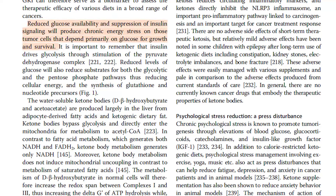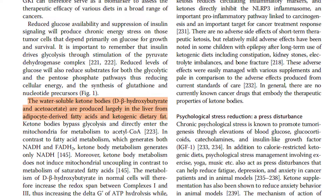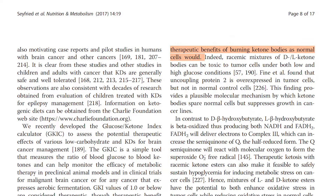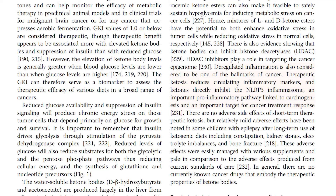Reduced glucose availability and suppression of insulin signaling will produce chronic energy stress on those tumor cells that depend primarily on glucose for growth and survival. The water-soluble ketone bodies, D-beta-hydroxybutyrate and acetoacetate, are produced largely in the liver from adipocyte-derived fatty acids and ketogenic dietary fat. Due to mitochondrial defects, tumor cells cannot exploit the therapeutic benefits of burning ketone bodies as normal cells would. Ketone bodies spare normal cells but suppress growth in cancer cells. Therapeutic ketosis reduces circulating inflammatory markers, and ketones directly inhibit the NLRP3 inflammasome, an important pro-inflammatory pathway linked to carcinogenesis and an important target for cancer treatment response.